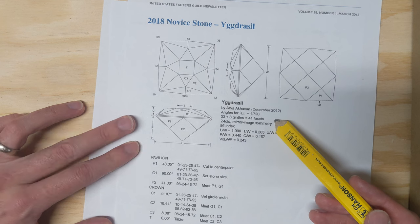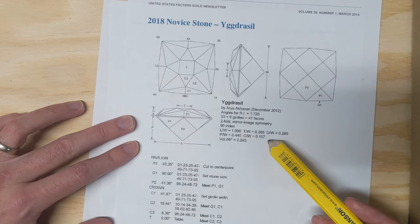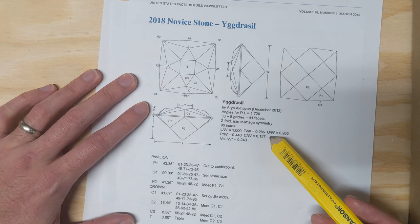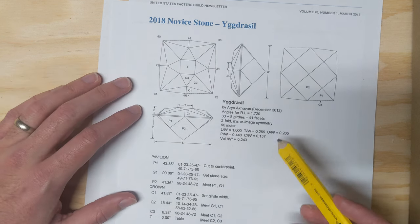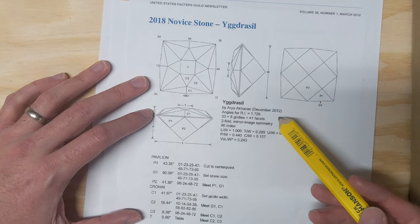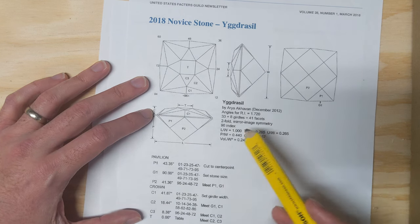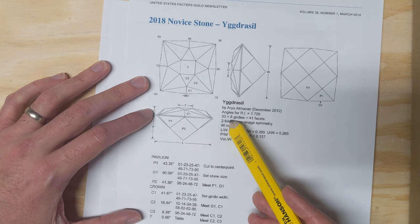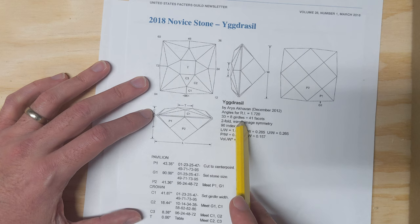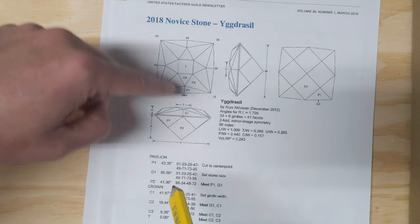A lot of what you'll see here is kind of standard on different faceting diagrams nowadays. It didn't used to be this standardized. Everybody had their own style for a number of years, but everybody's adopted this style more or less. You have the number of facets next, 33 plus 8 girdles. So there's 33 facets on the top and bottom, and then 8 girdle facets around the edge of the stone.